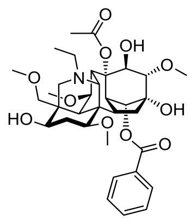LD50 values for mice are 1 mg/kg orally, 0.100 mg/kg intravenously, 0.270 mg/kg intraperitoneally, and 0.270 mg/kg subcutaneously. The lowest published lethal dose (LDLo) for mice is 1 mg/kg orally and 0.100 mg/kg intraperitoneally. The lowest published toxic dose (TDo) for mice is 0.0549 mg/kg subcutaneously. The LD50 value for rats is 0.064 mg/kg intravenously. The LDLo for rats is 0.040 mg/kg intravenously and 0.250 mg/kg intraperitoneally. The TDo for rats is 0.040 mg/kg parenterally.